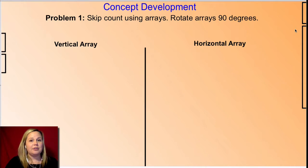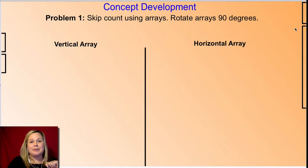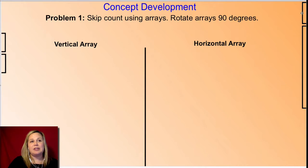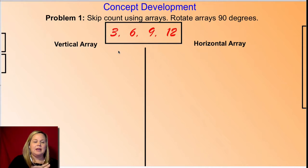Skip count by threes four times: three, six, nine, twelve — that's four times that I skip counted by threes. Go ahead and try that and write it on your board. You should get something that looks like this: three, six, nine, twelve.